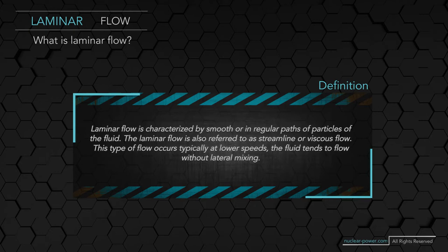When a fluid is flowing through a closed channel such as a pipe or between two flat plates, either laminar flow or turbulent flow may occur depending on the velocity, viscosity of the fluid, and the size of the pipe. Laminar flow tends to occur at lower velocities and high viscosity. On the other hand, turbulent flow tends to occur at higher velocities and low viscosity.